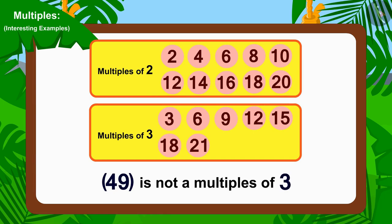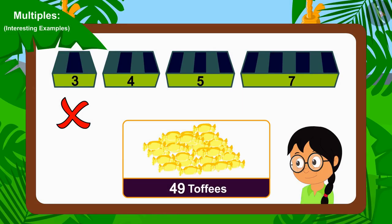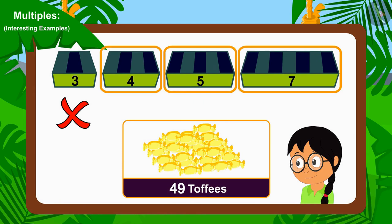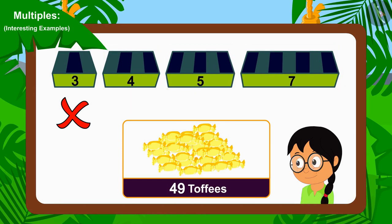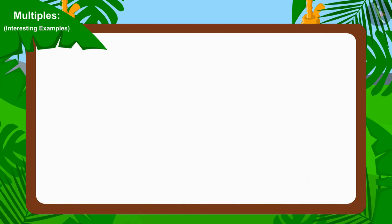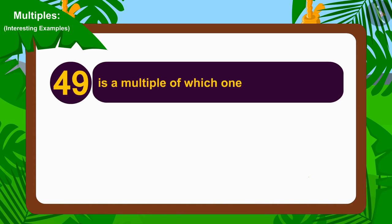This means which group will Minu have to use to distribute the 49 toffees equally? To find this out, we just have to find that 49 is a multiple of which one of the numbers: 3, 4, 5, or 7?